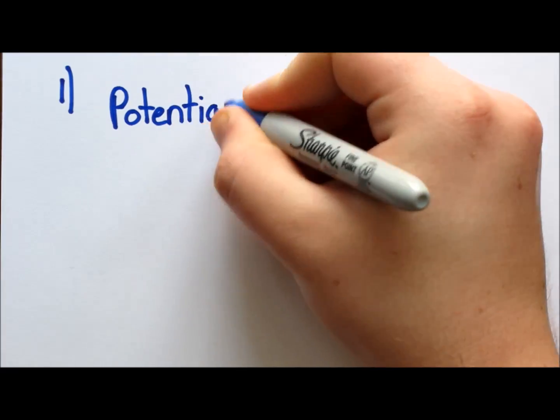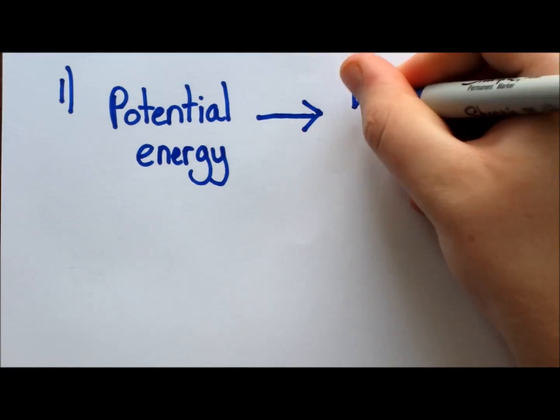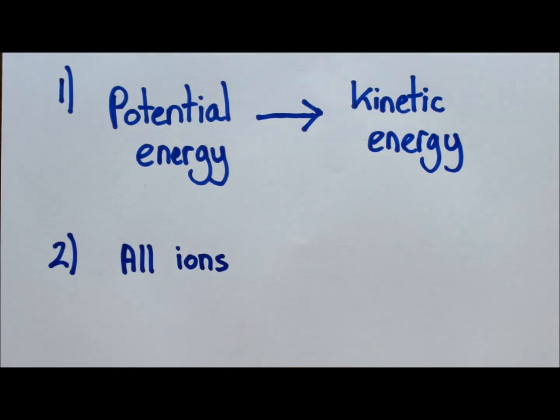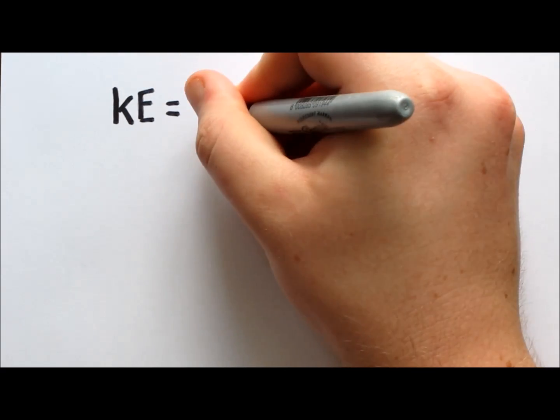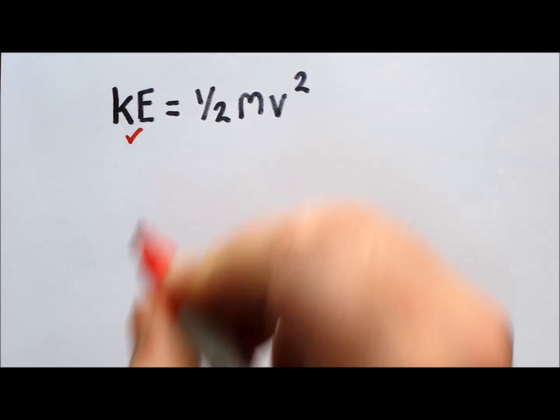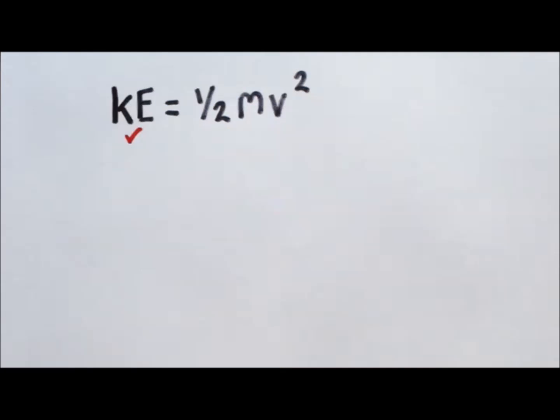Now let's look at the maths. We are going to assume all potential energy from the electric field is converted to kinetic energy, and all the ions produced are only singly charged. Because of these assumptions, we can express the energy of the ions only in terms of kinetic energy, one half mv squared. The kinetic energy is known as the strength of the electric field is set by the instrument.